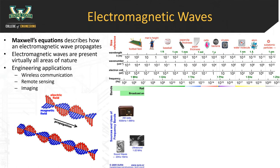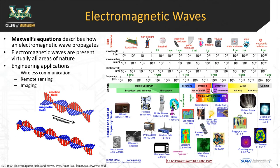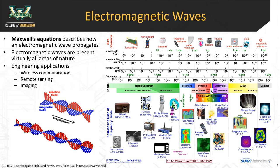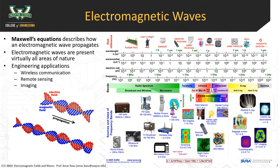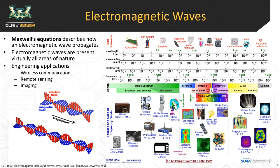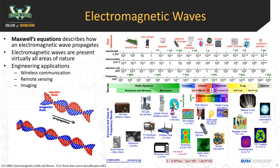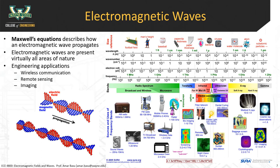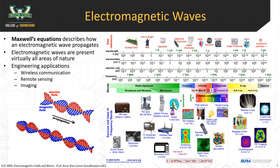We're going to go over Maxwell's equations, which describe how electromagnetic waves propagate. What is an electromagnetic wave? It includes visible light and has different wavelengths. An electromagnetic field that propagates in a certain direction — they're called electromagnetic waves because they consist of electric fields and magnetic fields coupled together.